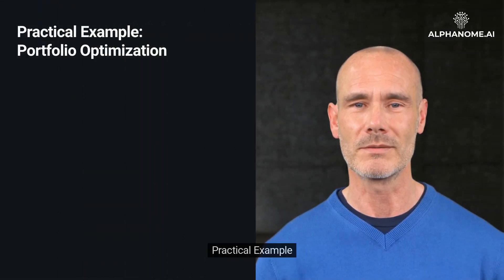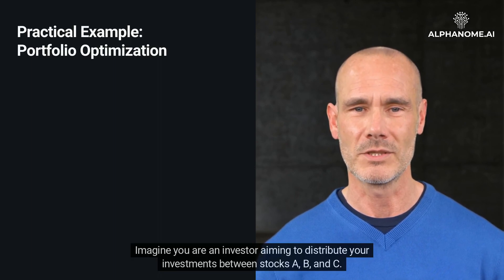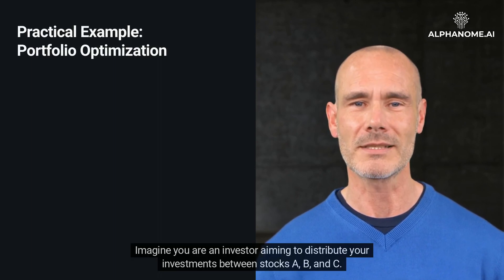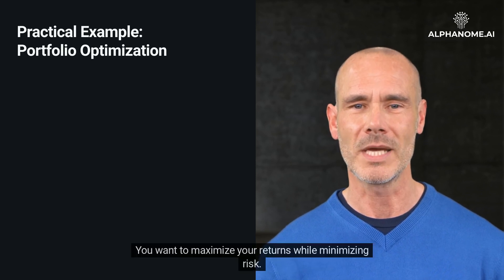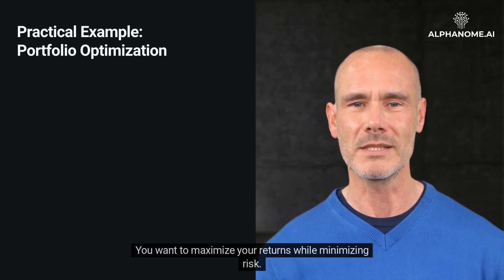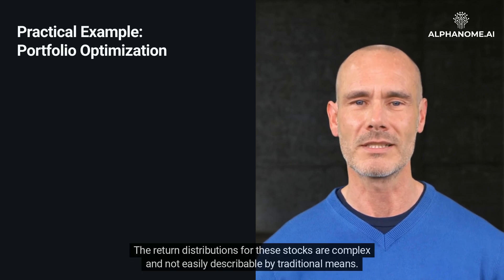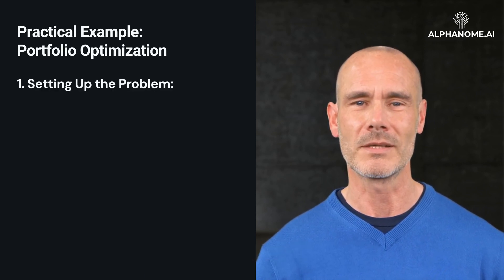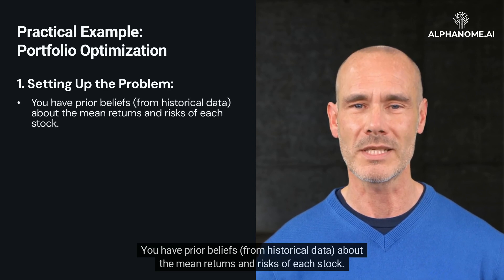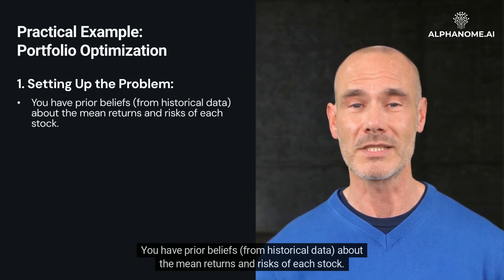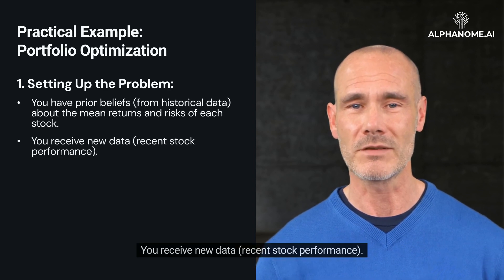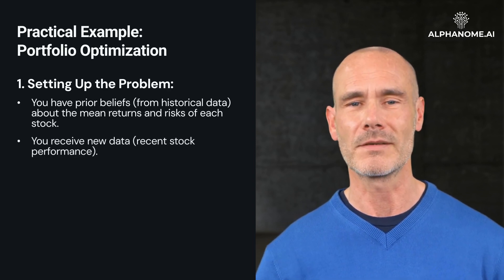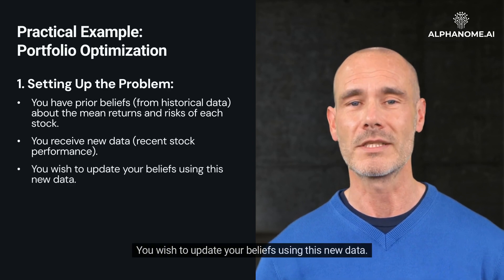Practical example: Portfolio optimization. Imagine you are an investor aiming to distribute your investments between stocks A, B, and C. You want to maximize your returns while minimizing risk. The return distributions for these stocks are complex and not easily describable by traditional means. Setting up the problem: you have prior beliefs, from historical data, about the mean returns and risks of each stock. You receive new data — recent stock performance — and you wish to update your beliefs using this new data.